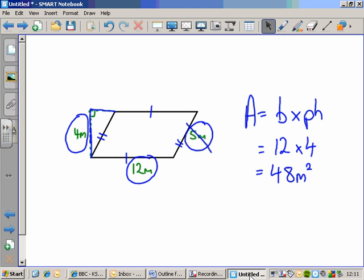It's the base times the perpendicular height. That's how you find the area of a parallelogram and for that matter the area of a rhombus also.